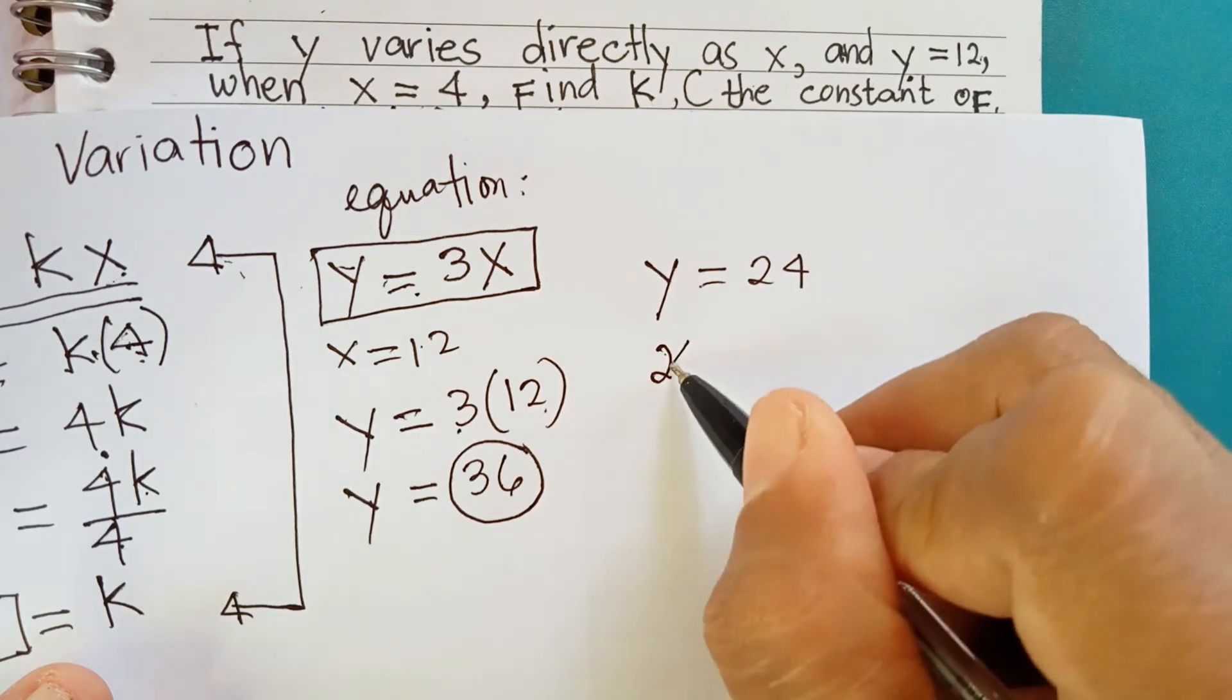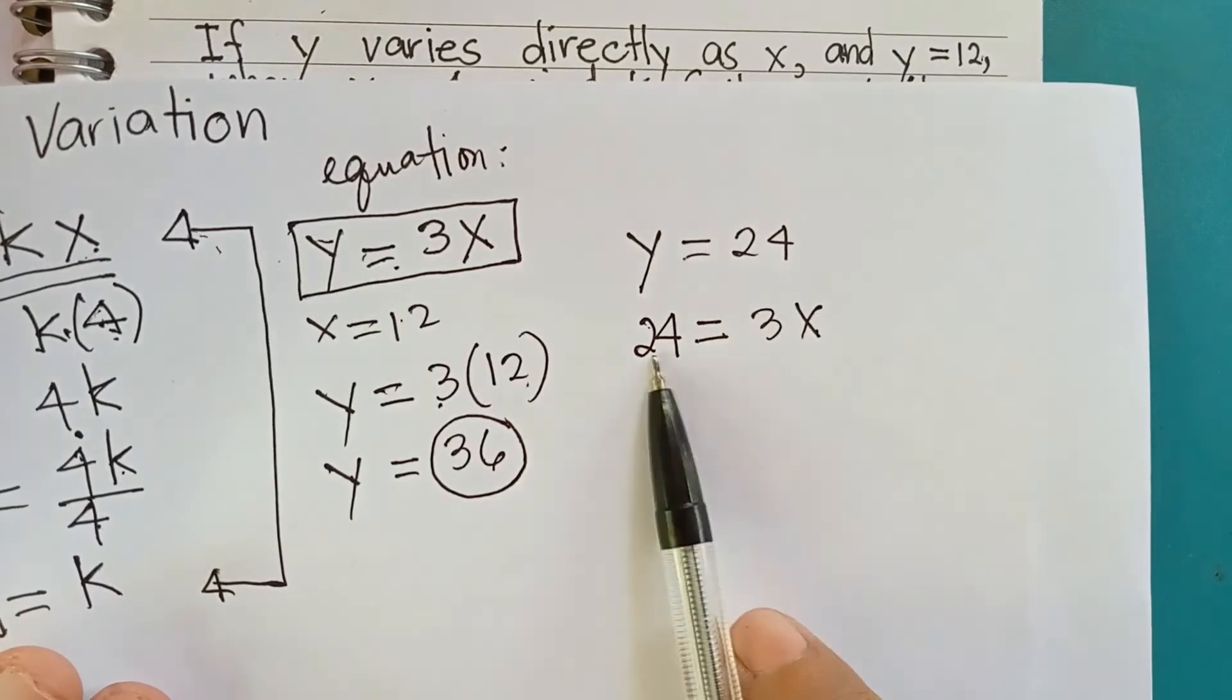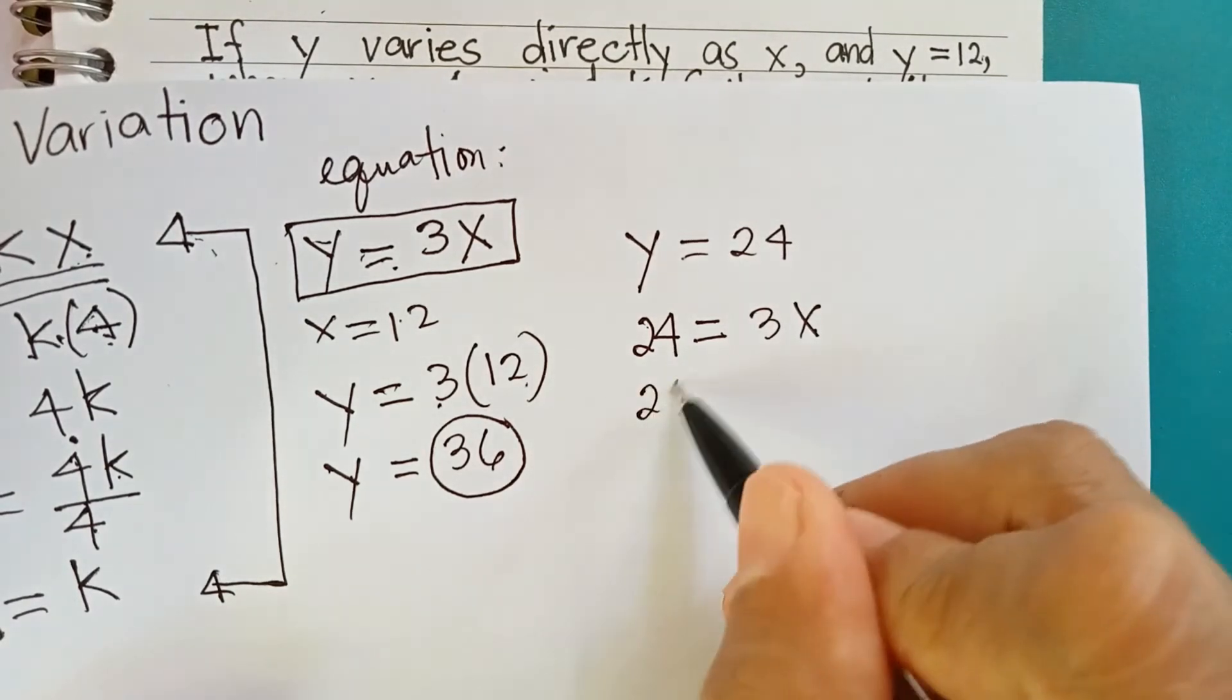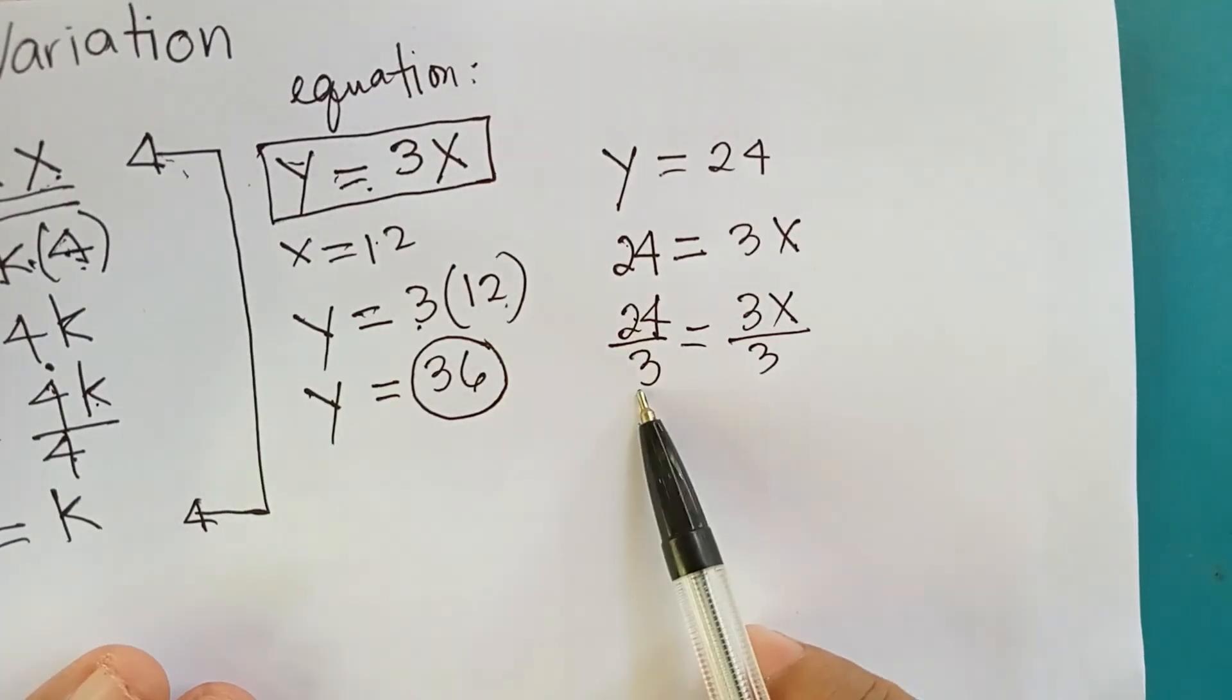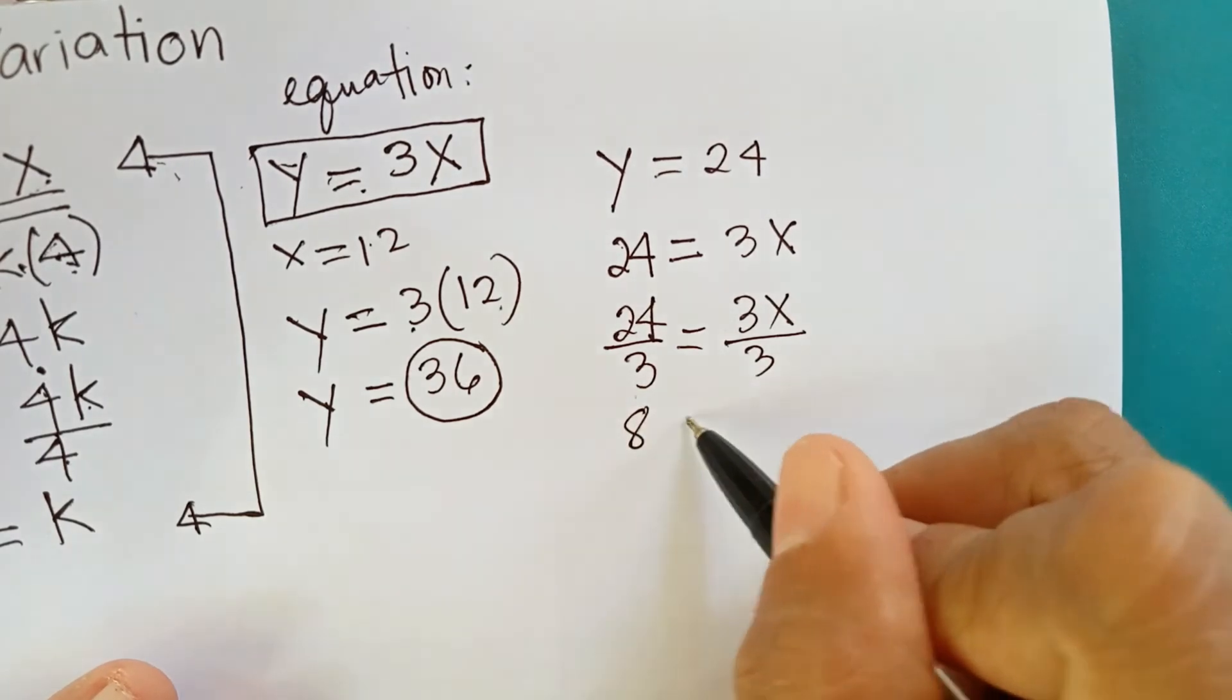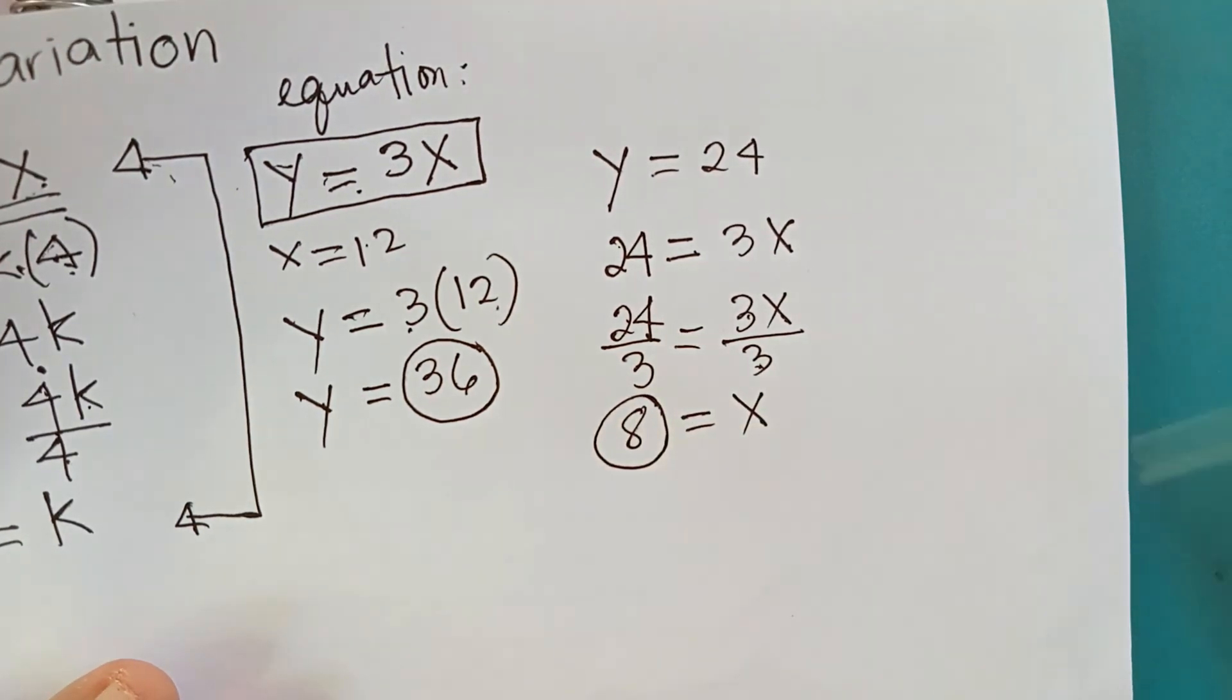y, substitute na ito ang 24 sa y, 3 times x. Then, i-divide both sides na ito o 3. Ito boh, 24 divided 3 equals 3x divided 3. What is 24 divided 3? The answer is 8. 3 divided 3, 1 times x o x. So, this is the value of x which is 8.